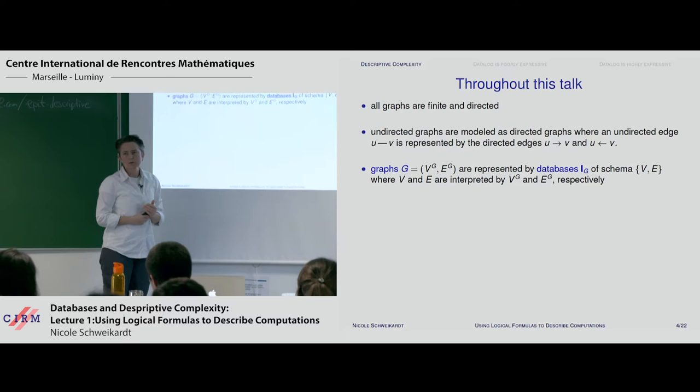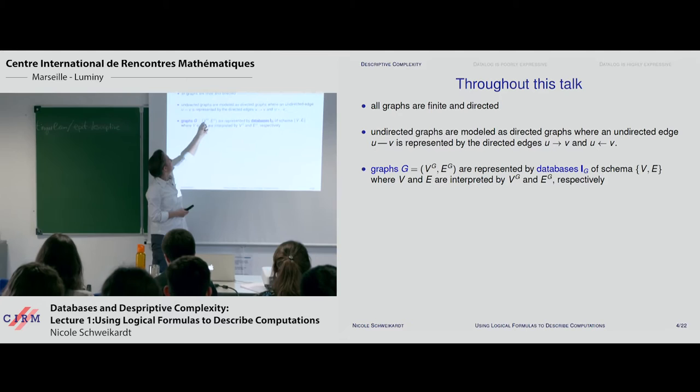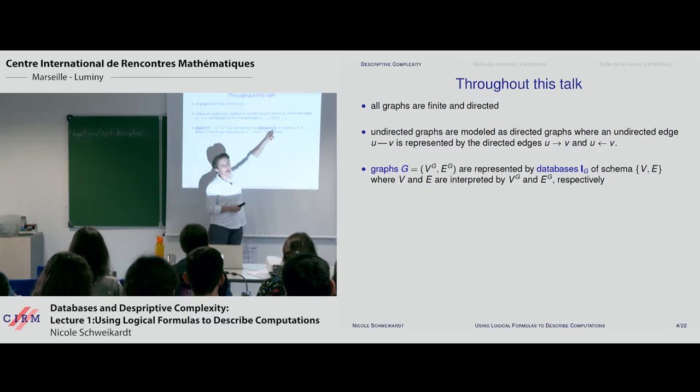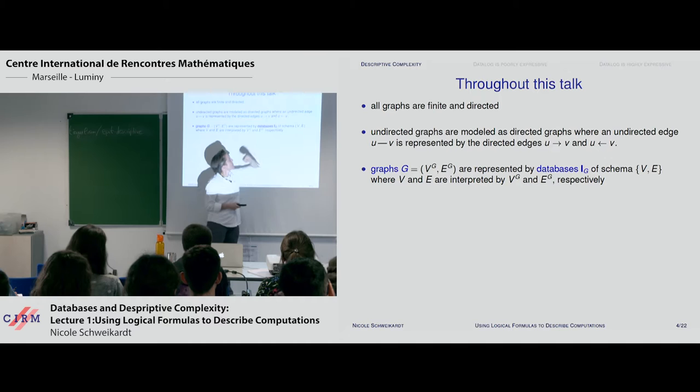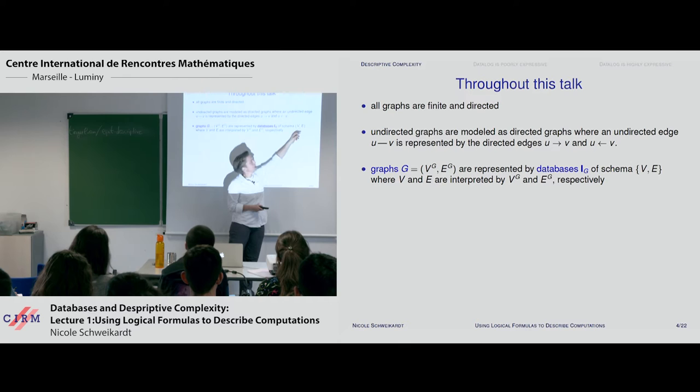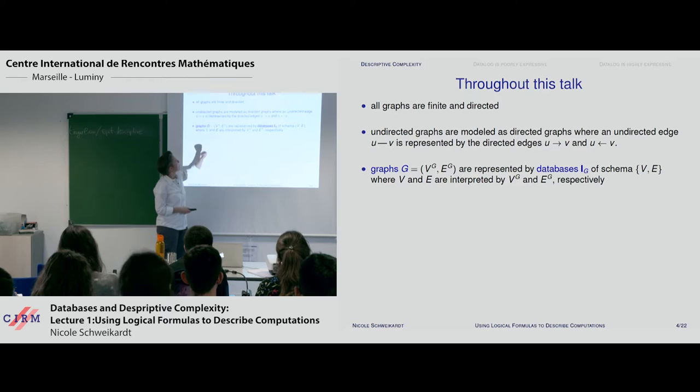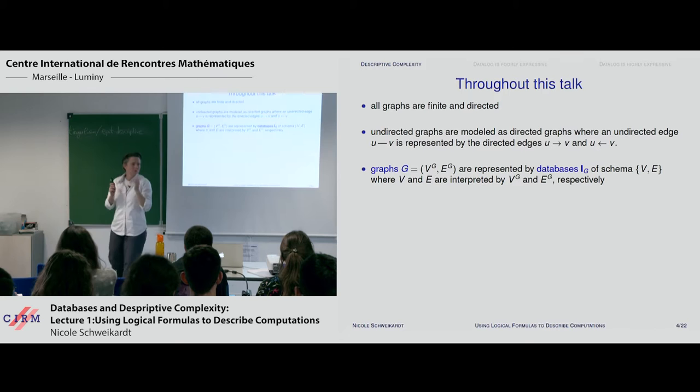I can represent graphs by databases in a straightforward way. If g is a graph with nodes V and edges E, I represent this by a database instance i. The database that represents graph g has schema V and E — a unary relation and a binary relation. The unary relation is just the set of nodes, and the binary relation is the set of edges.